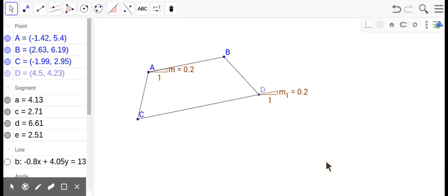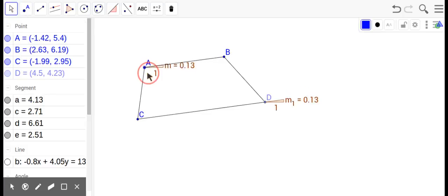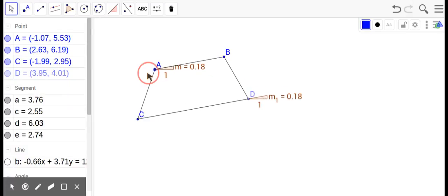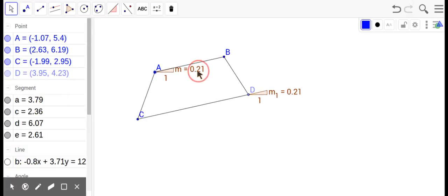So let's talk about trapezoids. Again, here are the segments. Nothing's the same on segments, but look at those numbers I've got on the screen. M equals .21, M1 equals .21.